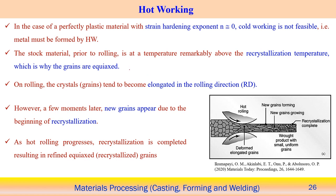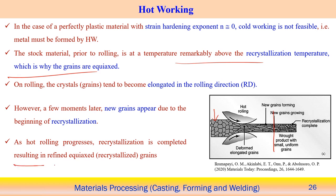The stock material prior to rolling is at a temperature remarkably above the recrystallization temperature, which is why the grains are equiaxed. When the temperature is above the recrystallization temperature, equiaxed grains always try to form. During hot rolling, crystals tend to become elongated in the rolling direction. But once conditions favor recrystallization, elongated grains convert to very fine recrystallized grains, resulting in refined equiaxed grains after hot rolling.